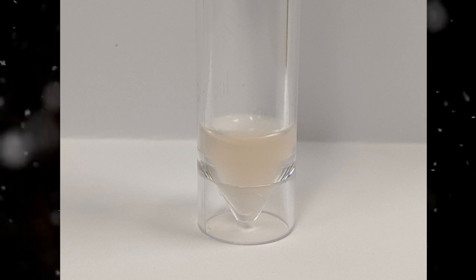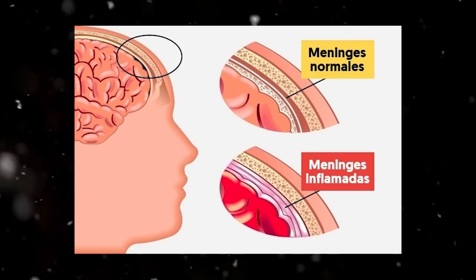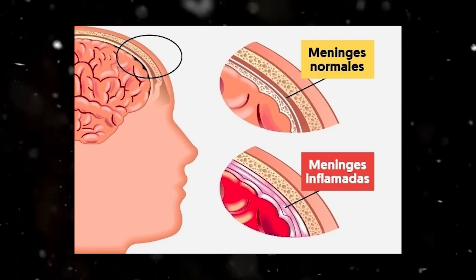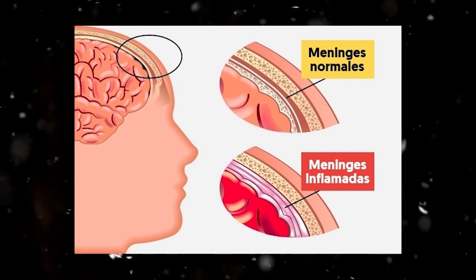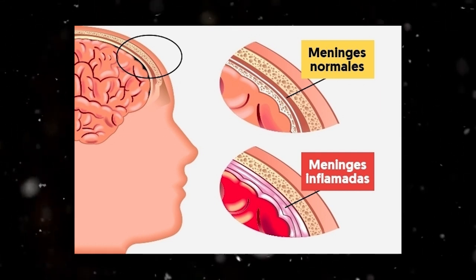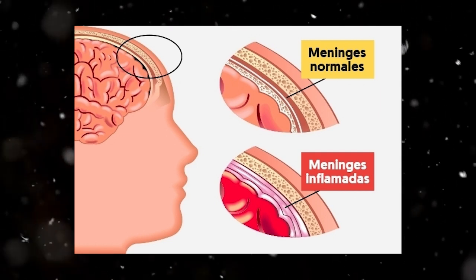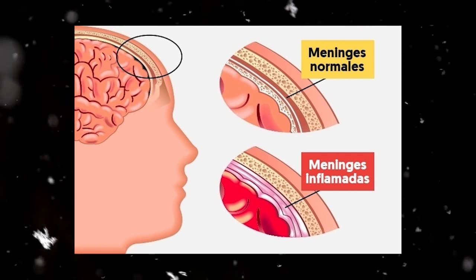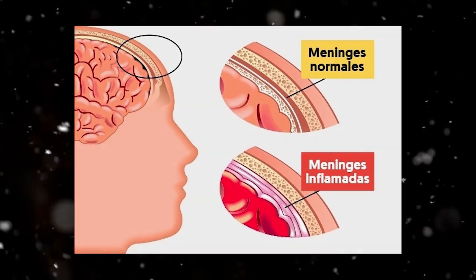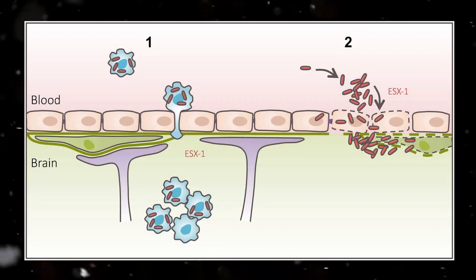Meningitis will be caused when the pathogen reaches the inner meninges. This can be done by consuming infected mucus, sinus infections, or even sharing an infected person's utensils. Bacterial or viral meningitis will usually occur when the pathogen passes through the blood-brain barrier from the bloodstream.